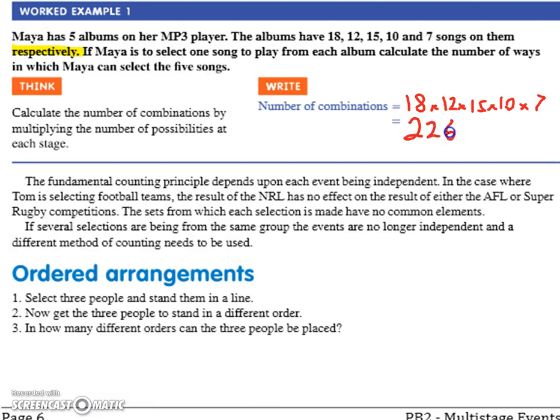226,800. That is the number of possibilities. Five songs — to select one song from each album, there are 226,800 different ways she could select them.